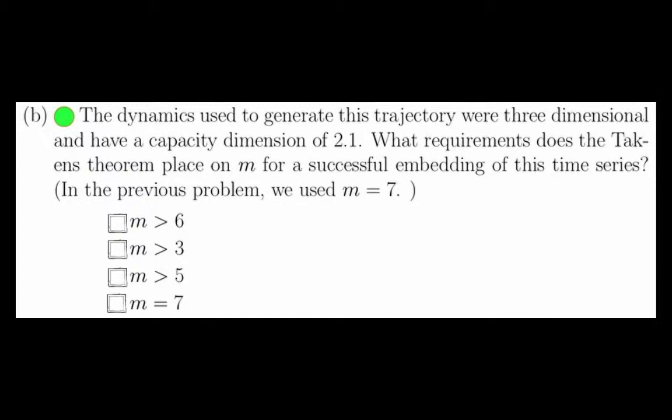Part B states that the dynamics used to generate the trajectory from the last problem was 3 dimensional and had a capacity dimension of 2.1. What requirement does the Taulken's theorem place on m for a successful embedding of this time series?